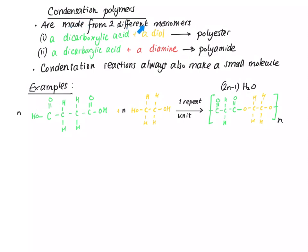Condensation polymers are made from two different monomers. If you react a dicarboxylic acid and a diol you end up with a polyester, and if you react a dicarboxylic acid and a diamine you get a polyamide. Condensation reactions also always make a small molecule. If you have n moles of a dicarboxylic acid and n moles of a diol or diamine, you will always get 2n minus 1 moles of water.